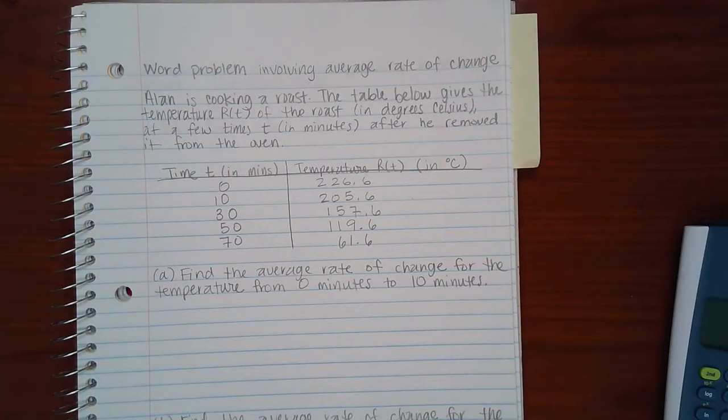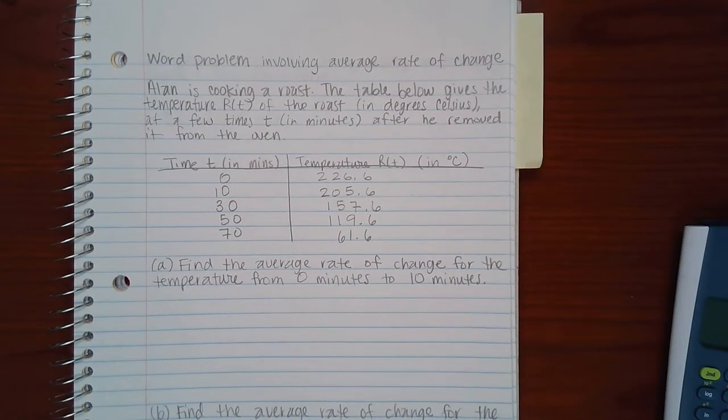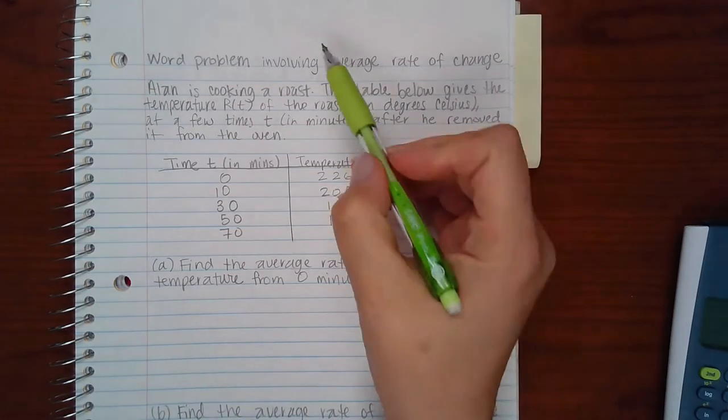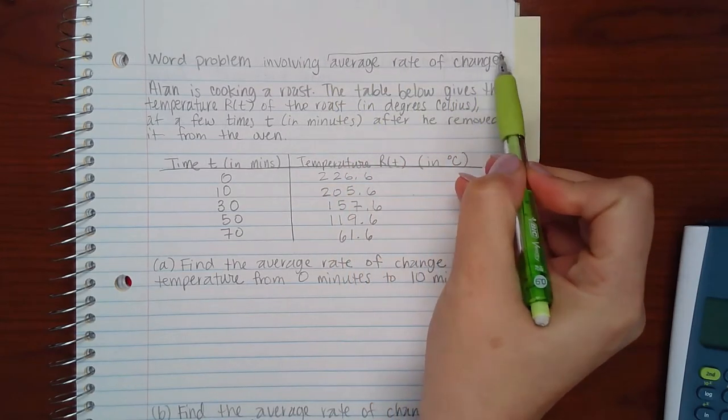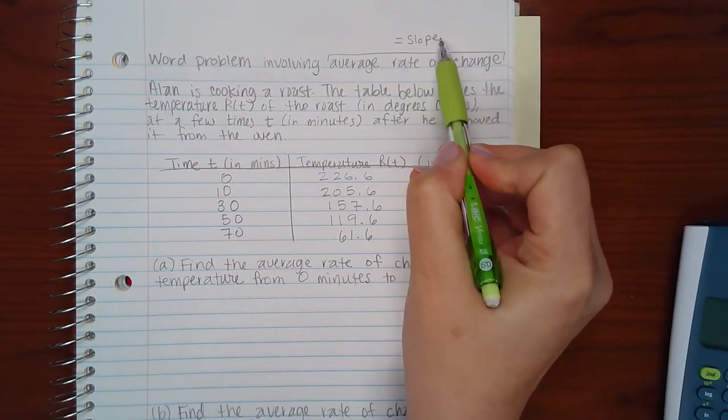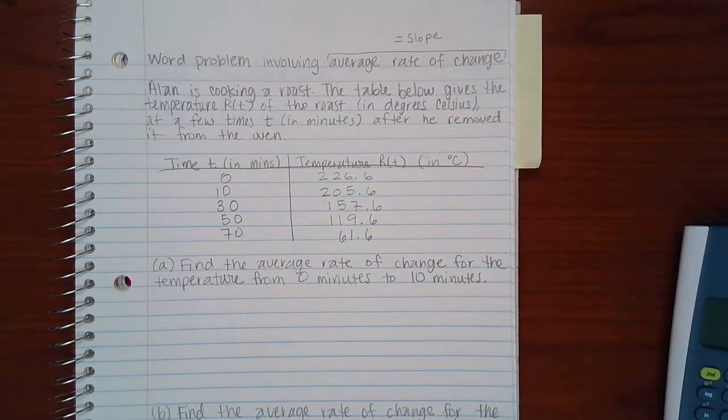This topic is word problems involving average rate of change. Before we start, it's good to know that average rate of change is just the word problem version of saying slope. So anytime a problem asks you for the average rate of change, all they're asking you to do is find the slope.